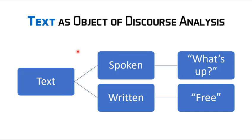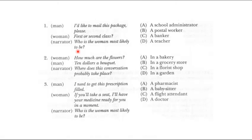In English tests, we can use discourse analysis to find the correct answers. For example, for a question asking who the woman most likely is, we look at the dialogue: 'I'd like to mail this package please, first or second class?' Keywords like 'mail,' 'package,' and 'class' are the discourse clues that allow us to determine the answer is a postal worker.